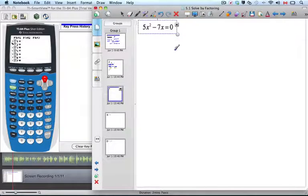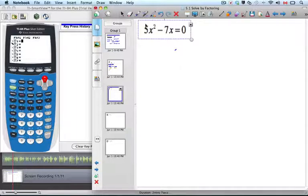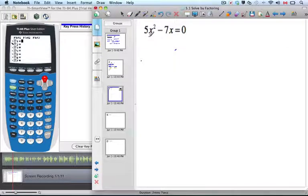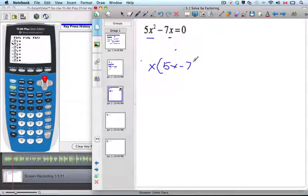When I have a scenario where I have, it's 5x squared minus 7x equals zero. There's no third term here. So I have to do a different kind of factoring. And if I look at this, I can see that there's an x in both. So I'm going to do what's called a common factor. I'm going to pull out just simply the x. And 5x minus 7 equals zero.